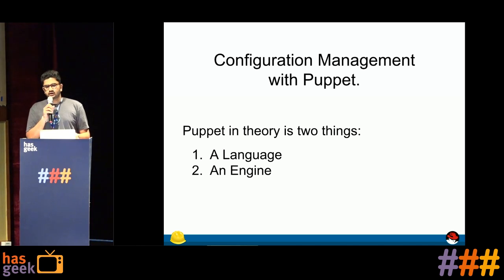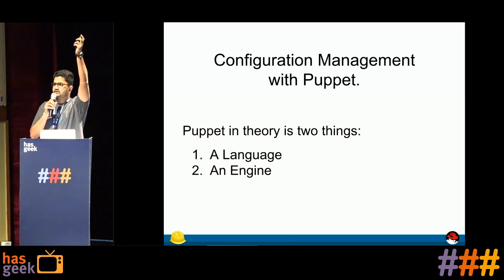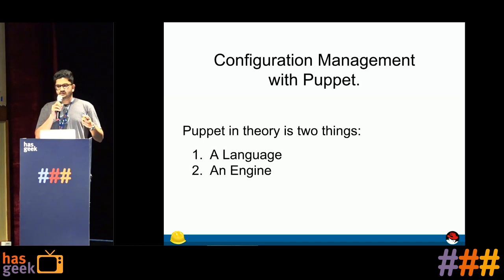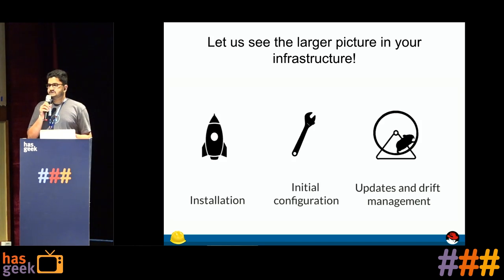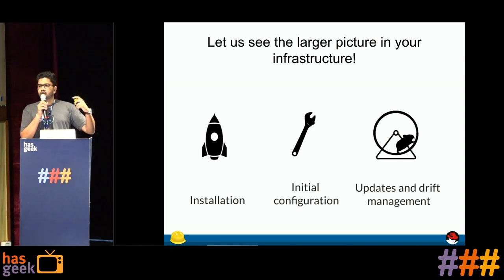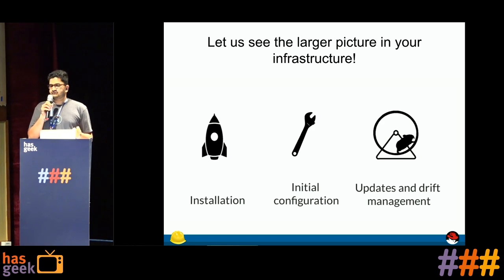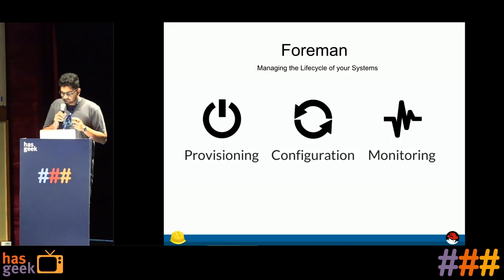Before looking at Foreman, let's look at its history. Puppet is a configuration management tool used to configure your machines and nodes. Puppet solves a huge amount of problems, but if you look at a system's entire lifecycle — installation, configuring the machine, and monitoring — Puppet only handles initial configuration. What about installing, updates, and drift management? Foreman is a complete lifecycle management tool which looks after installation, initial configuration, and monitoring of your nodes.